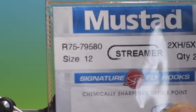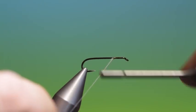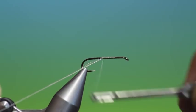Okay, we'll start with the Mustard R75 size 12. This is a simple but very effective and semi-realistic stonefly nymph.